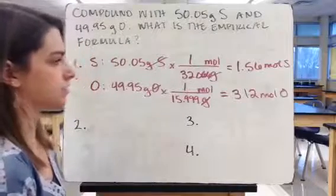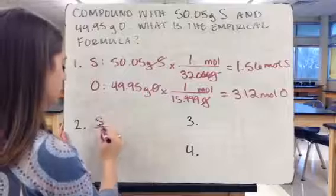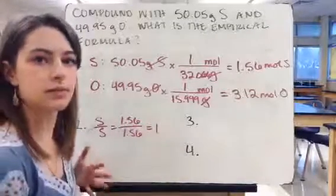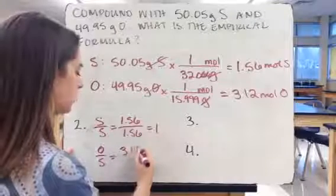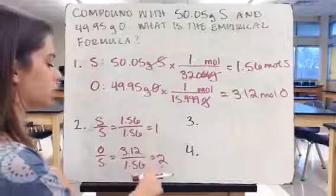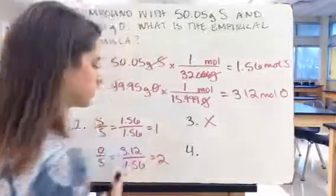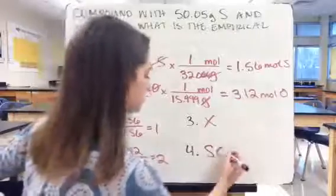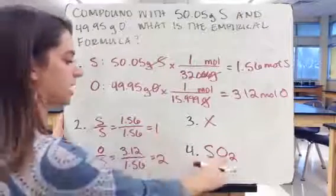Now we find the mole ratio using the smallest number of moles, which is sulfur. Sulfur to sulfur: 1.56 ÷ 1.56 = 1. Oxygen to sulfur: 3.12 ÷ 1.56 = 2. The ratio of oxygen to sulfur is 2 to 1. The ratios are already whole numbers, so no rounding is needed. Writing the formula, we have 1 sulfur and 2 oxygens, giving us an empirical formula of SO₂.